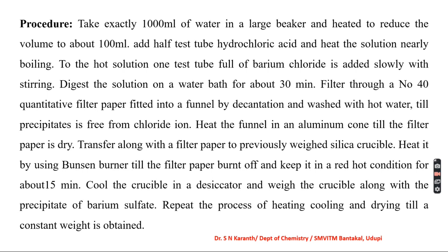Filter through a Number 40 quantitative filter paper fitted into a funnel by decantation, and wash with hot water until the precipitate is free from chloride ion. Heat the funnel in an aluminum cone till the filter paper is dry. Transfer along with the filter paper to a previously weighed silica crucible. Heat using a Bunsen burner till the filter paper is burnt off and keep in red hot condition for about 15 minutes. Cool the crucible in a desiccator, weigh, and repeat heating, cooling, and drying till constant weight is obtained.